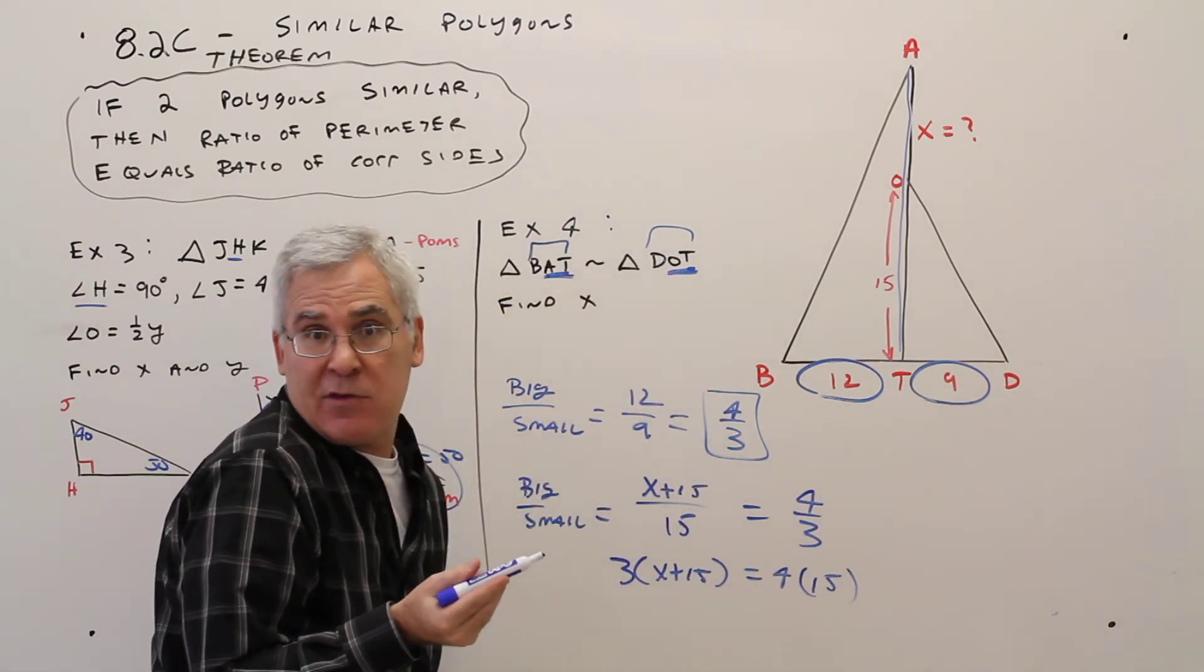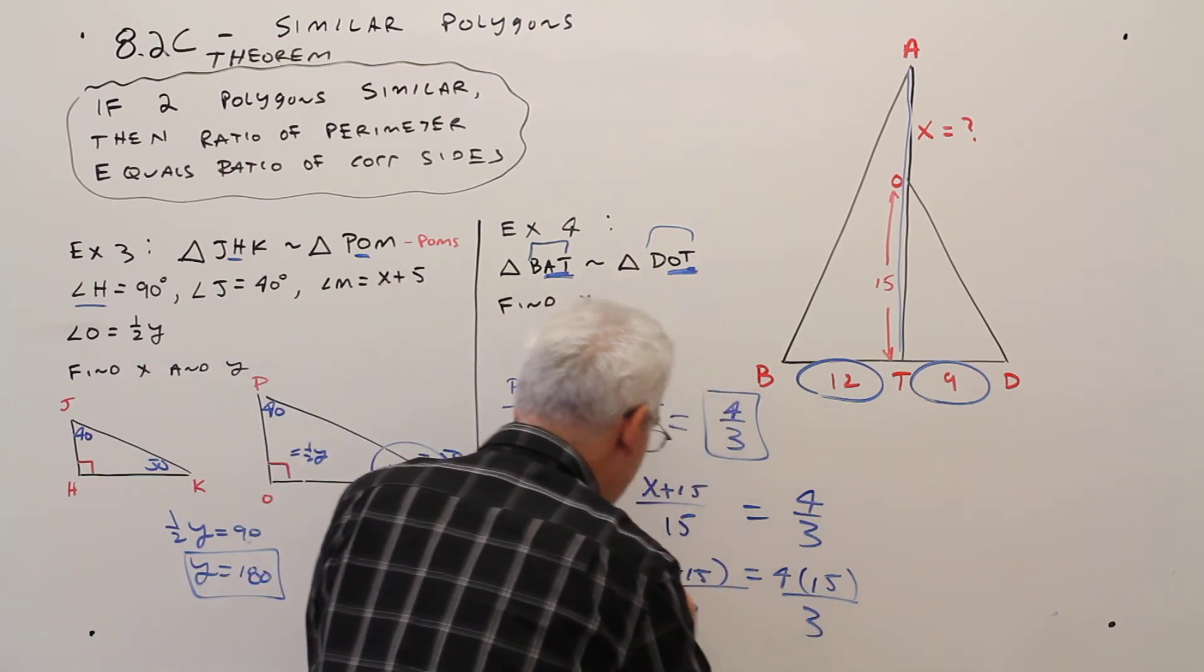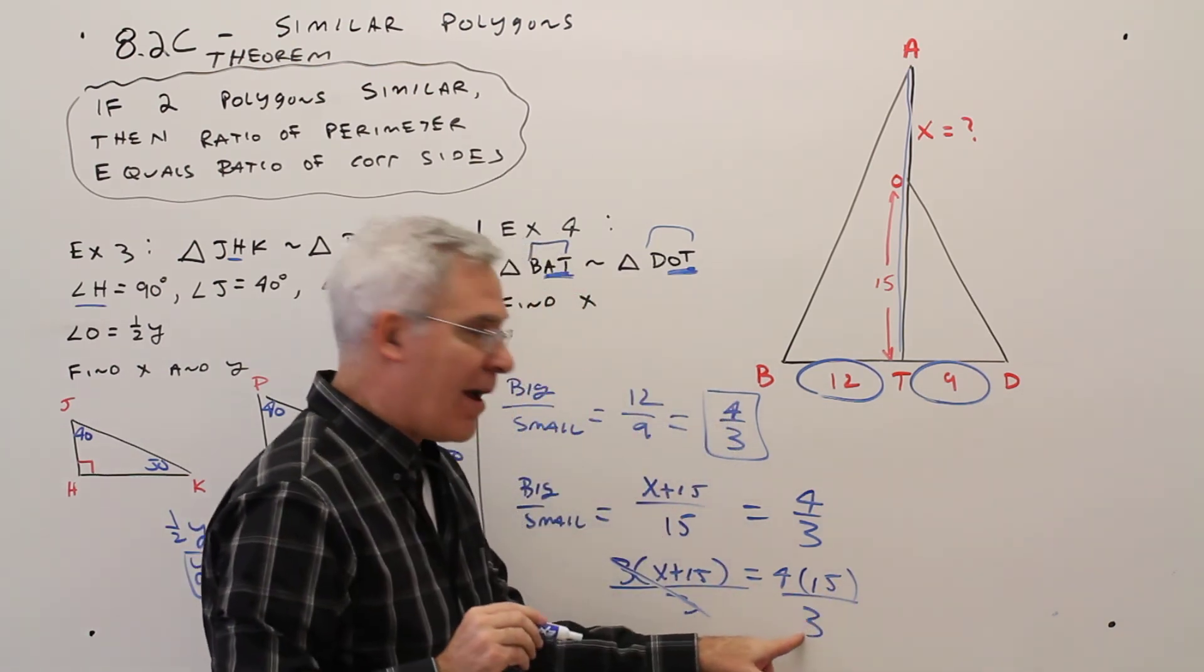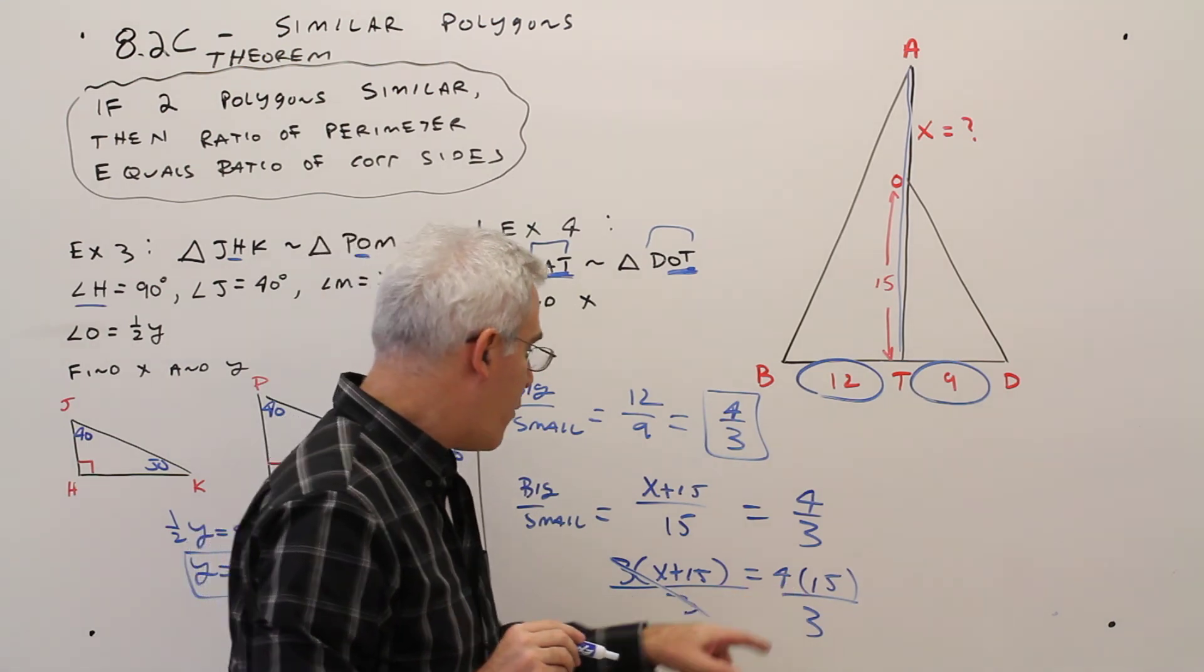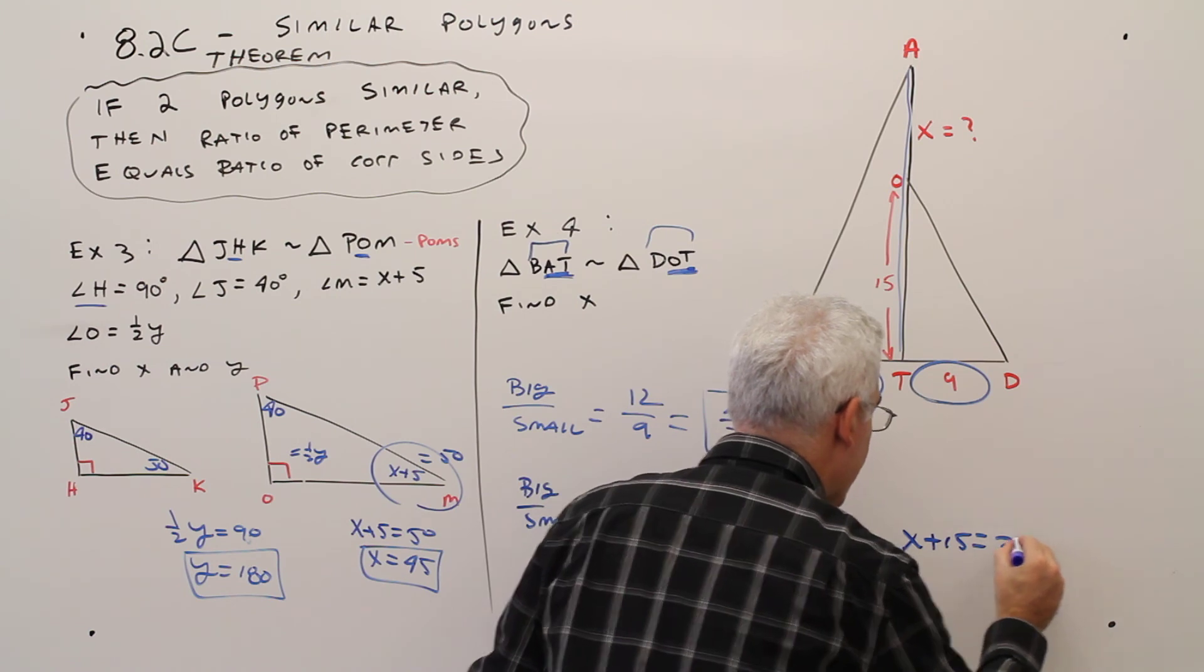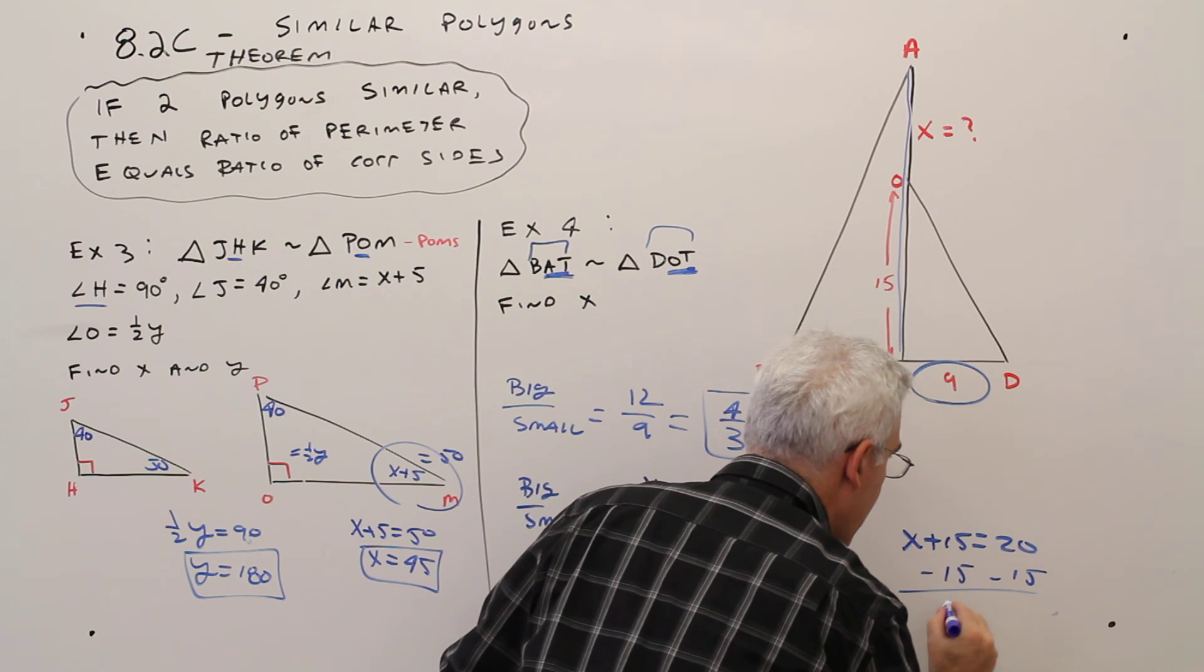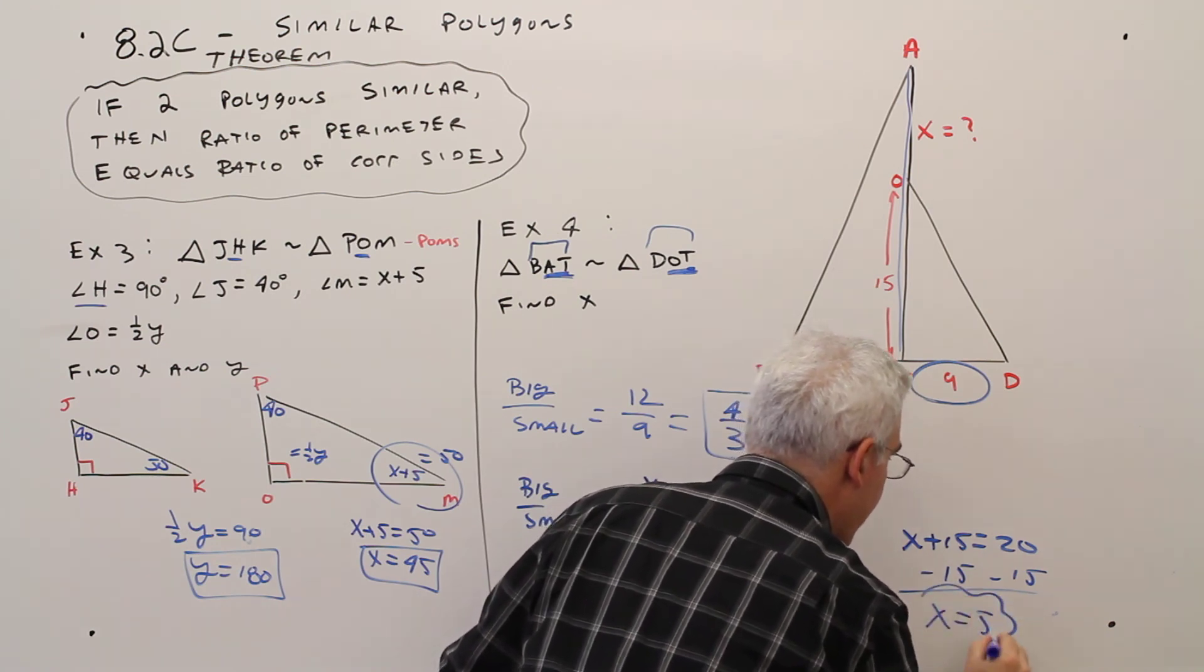If you want, you can divide each side by 3. Divide by 3, divide by 3. 15 divided by 3 is 5. 5 times 4 is 20. So X plus 15 equals 20. Subtract 15.